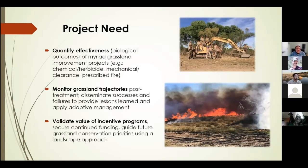There are three main needs we've identified for GEM — Grassland Effectiveness Monitoring. First, we need to quantify effectiveness and biological outcomes of these many grassland habitat improvement projects, answering questions about treatment effectiveness and timing for follow-up treatments. Second, we need to monitor grassland plant community trajectories post-treatment and share successes and failures to enable adaptive management. Third, we need to validate the value of these incentive programs to secure additional funding, guide future conservation priorities, and verify our efforts are effective — especially to Congress.